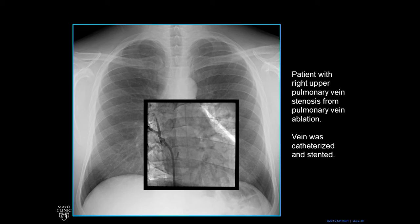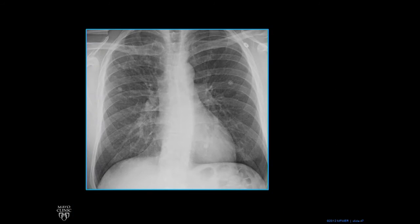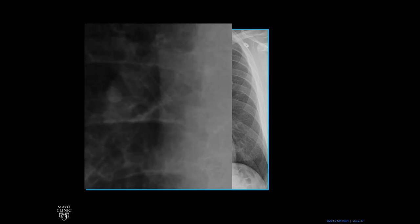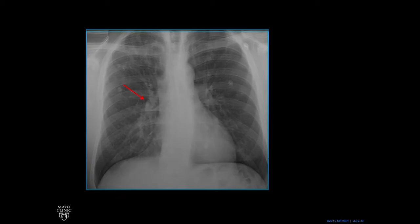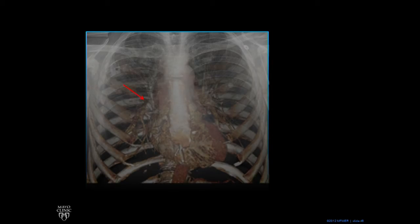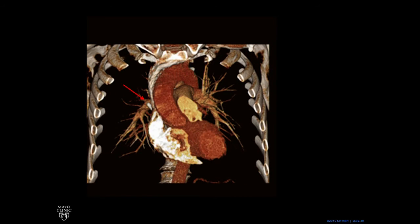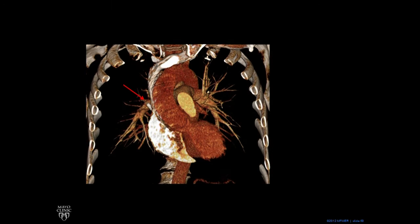This vein was catheterized and stented, meaning a metal tube was put in to keep it open. Can you see the stent? There it is — it's this metal tube keeping that vein open. Keep your eye on that stent, fade away, overlay the CT scan, peel back, and there's the stent. The point of this is to show that the pulmonary veins really do run in that area. The right upper pulmonary vein is stented — you can see it as a white structure.